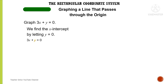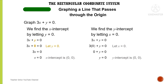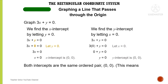We find the X-intercept by letting Y equal to 0, substituting into the equation, then solving — the X-intercept is (0, 0). We find the Y-intercept by letting X equal to 0, substituting into the equation, then solving — the Y-intercept is also (0, 0). Both intercepts are the same ordered pair (0, 0), which means the graph goes through the origin.